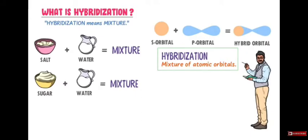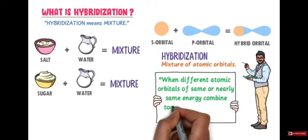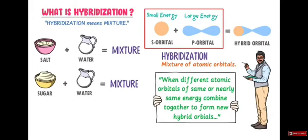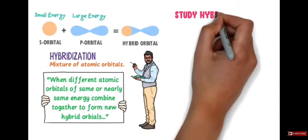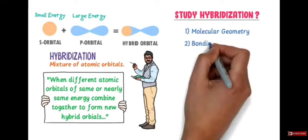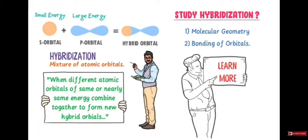We define hybridization as when different atomic orbitals of same or nearly the same energy combine together to form new hybrid orbitals. For example, the energy of s orbital is smaller than p orbital, but nearly they have the same energy, so they combine together to form hybrid orbitals. Hybridization of atomic orbitals teaches two important concepts: it shows us the molecular geometry or shape of the molecule, and secondly, the bonding of atomic orbitals.